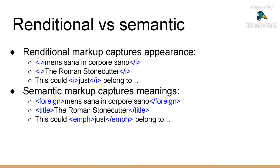Digitally speaking, markup is information in a file that tells you something about the other things in that file. Your file consists of content and markup that tells you something about it. The key thing to remember is the difference between markup that captures how something should appear and markup that captures the meaning of what you're marking up. The first example is HTML — you can see three examples where you might want to put text in italics.